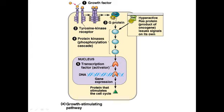So here's what happens with RAS: the mutated RAS gene causes the G protein to be hyperactive, and you end up with an unrestrained cell cycle. That is a signal transduction pathway, which is one of the key concepts to know. So understanding the RAS gene is important because it involves signal transduction.